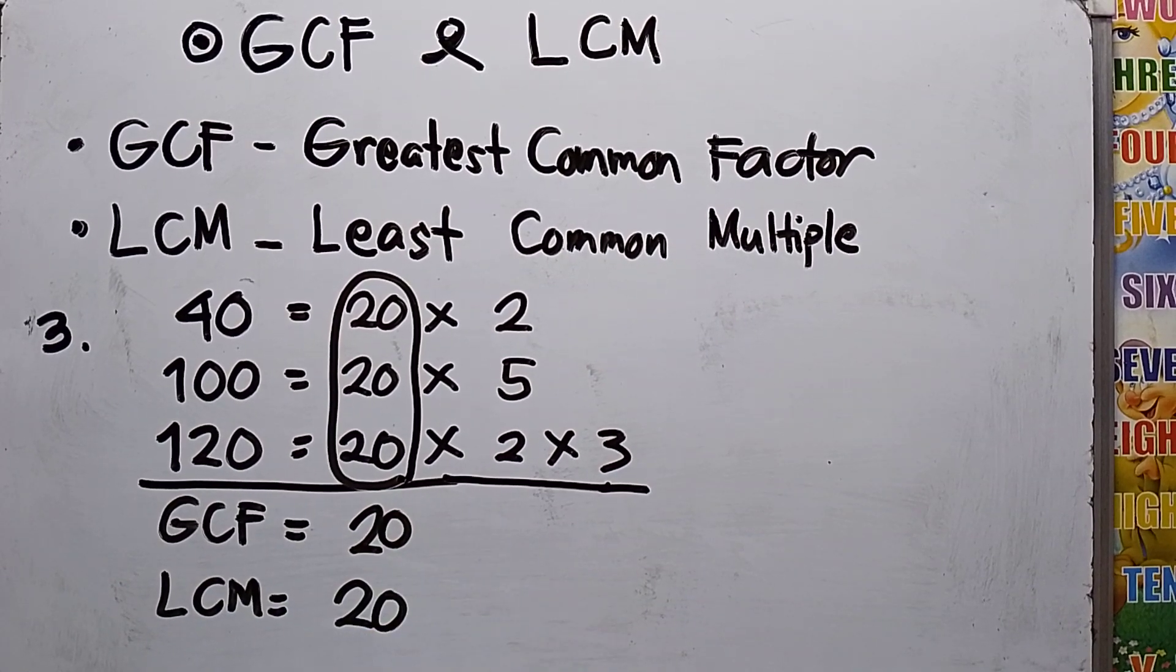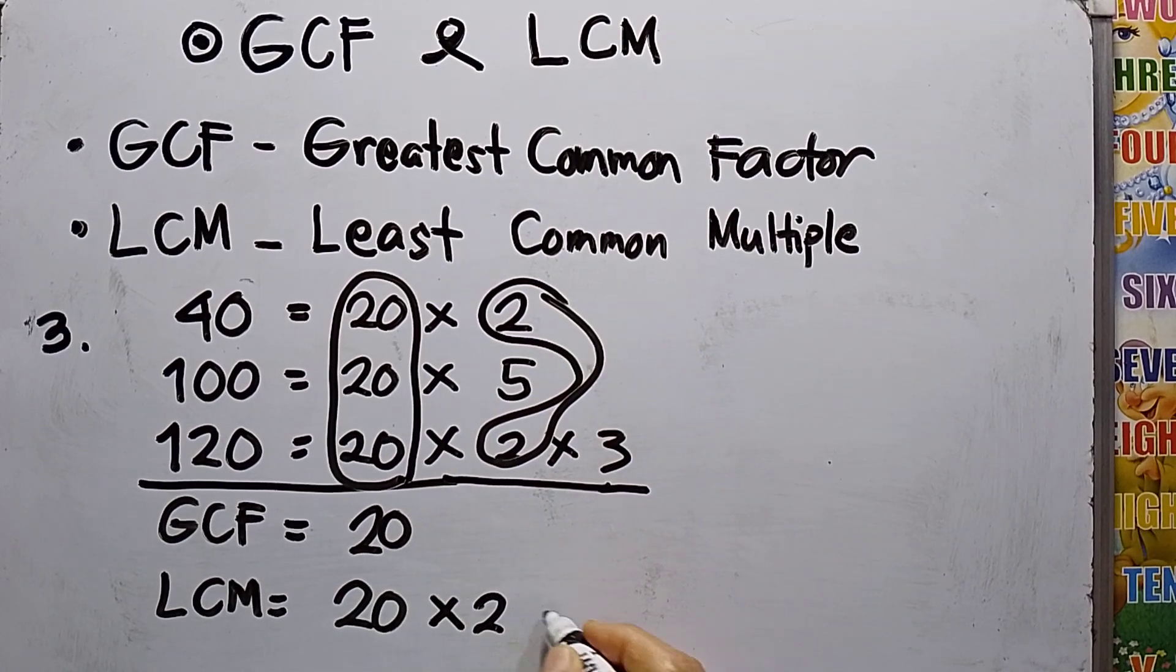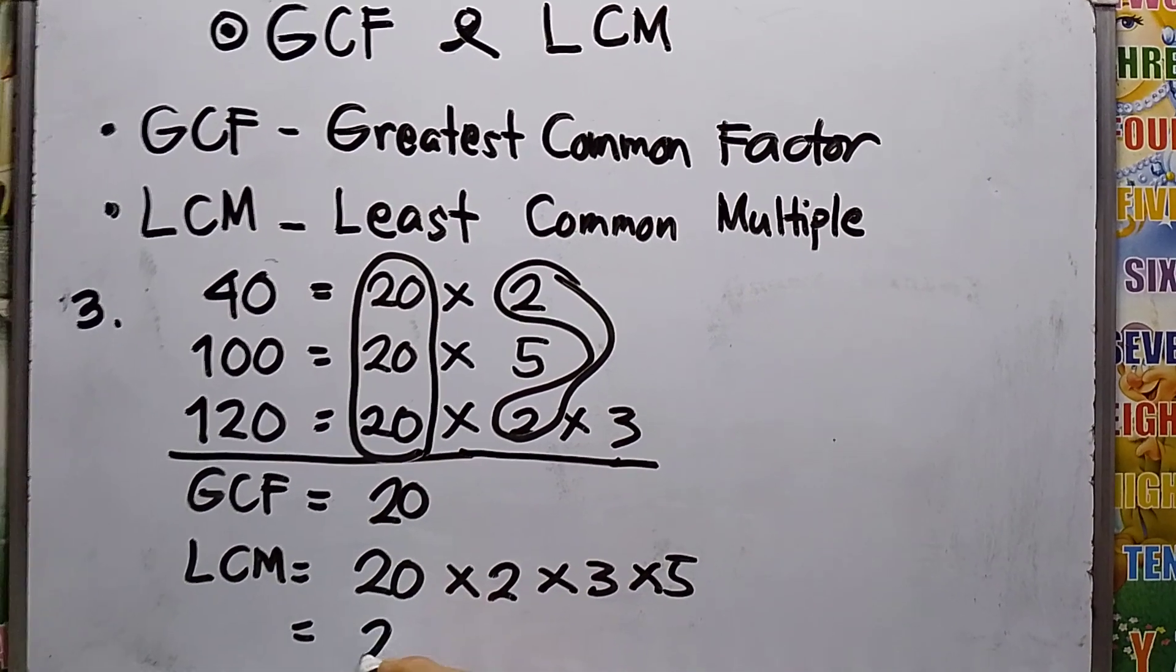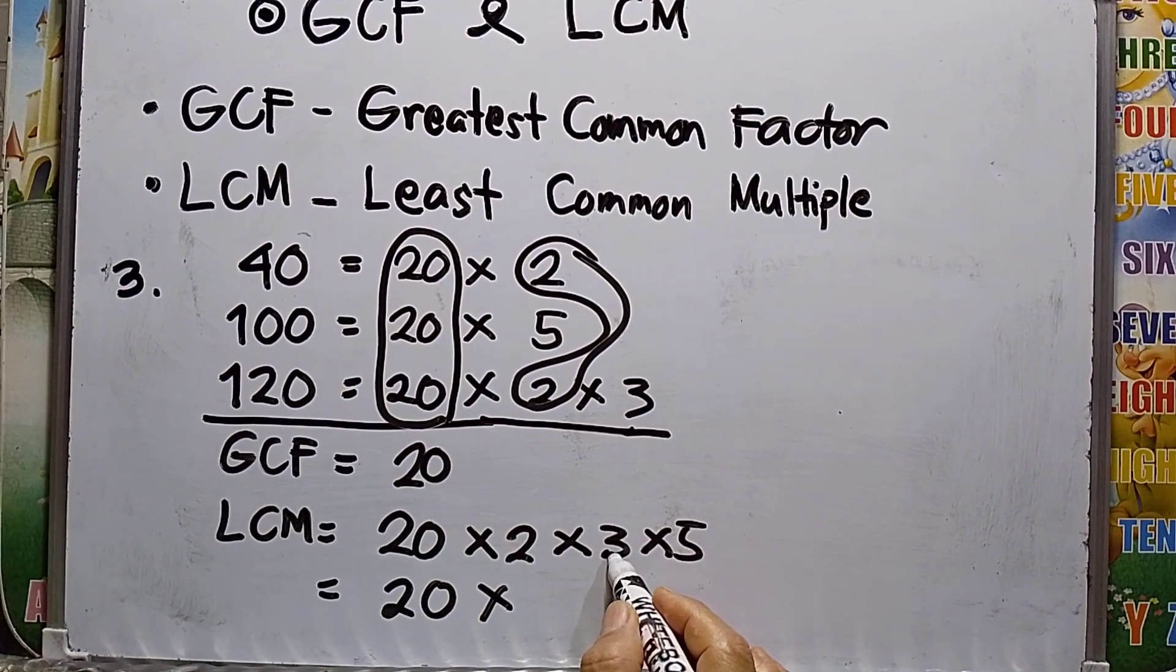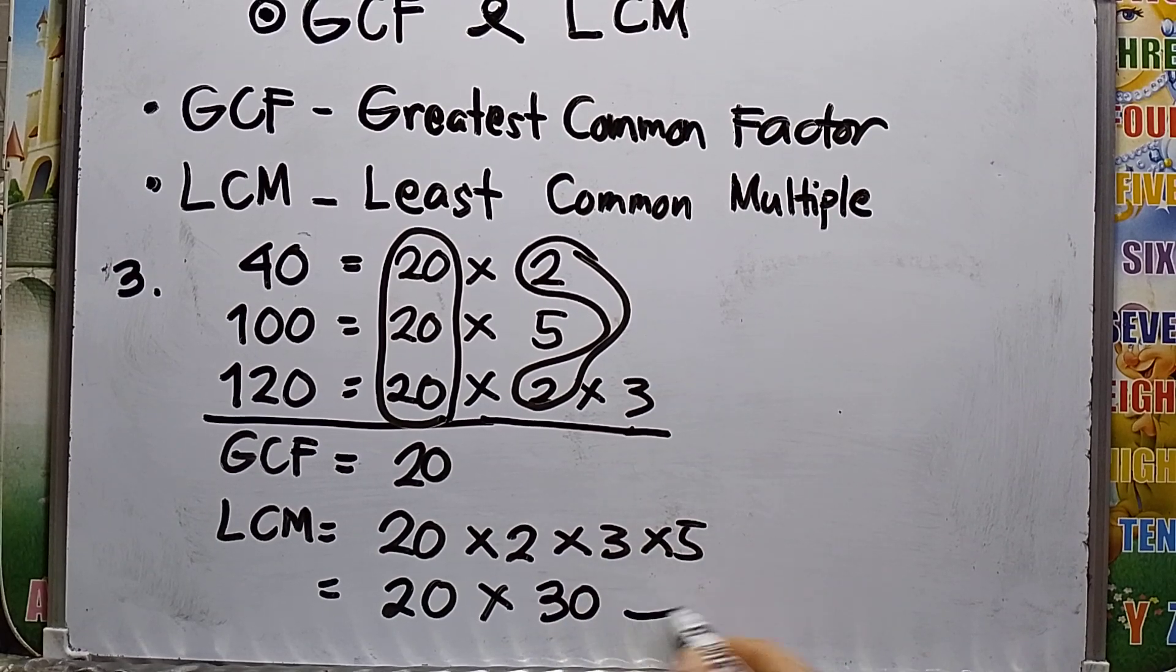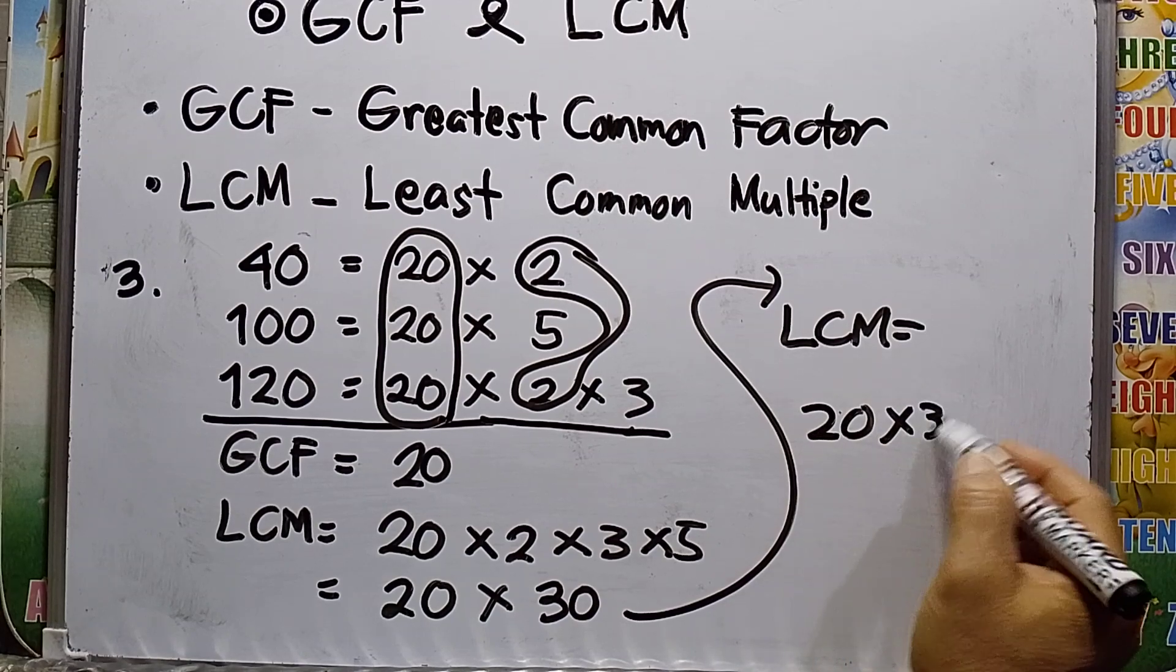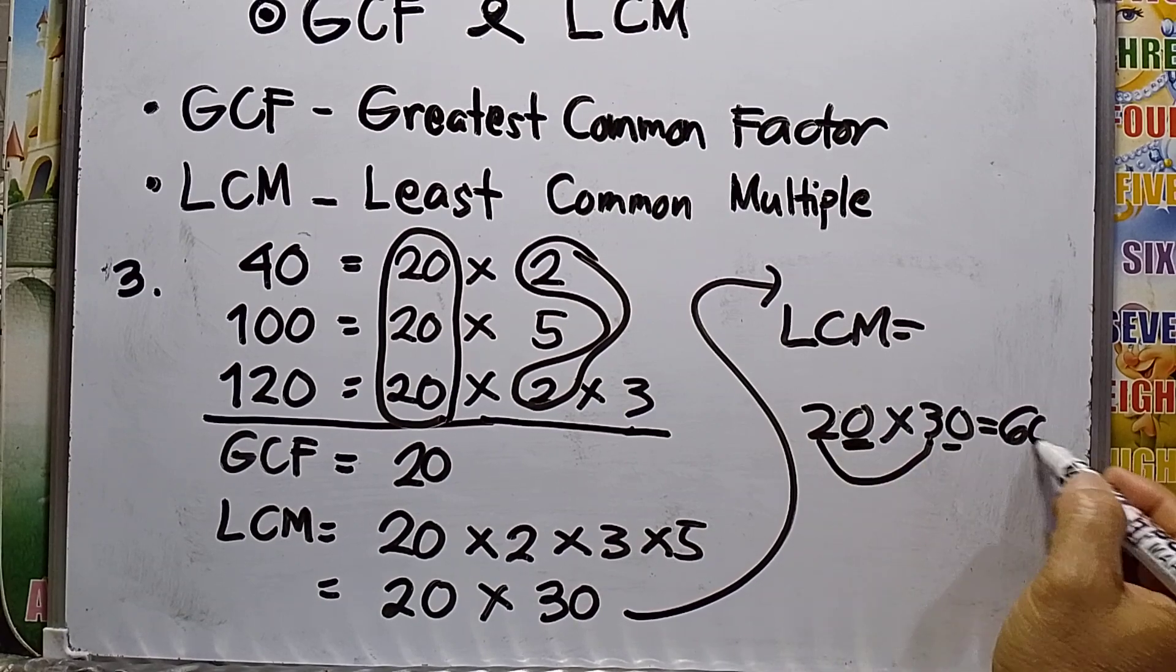LCM: the GCF which is 20. Take note, write this one only once: 2 times 3 times 5. So 20 times 2 times 3 times 5. That will be 20 times 30. What is 20 times 30? 3 times 2 or 2 times 3 is 6, copy the two zeros. So my LCM for number 3 is 600.